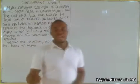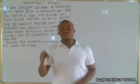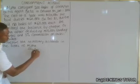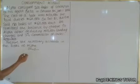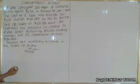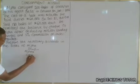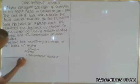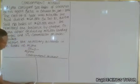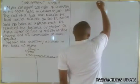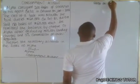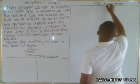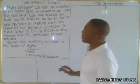Now when it is said he consigned goods, two accounts are affected: the consignment account and the goods on consignment account. So in the book of Alpha we are going to open a consignment account and a goods on consignment account.